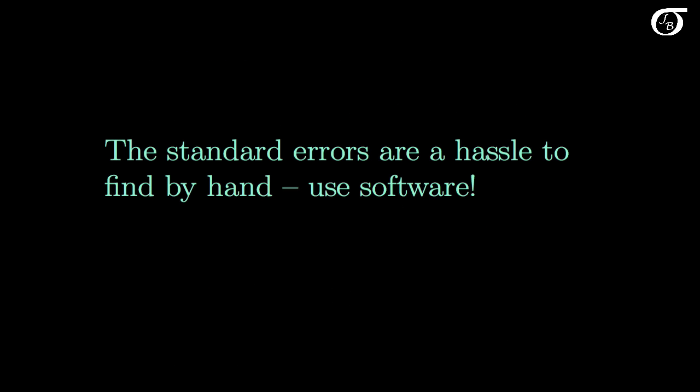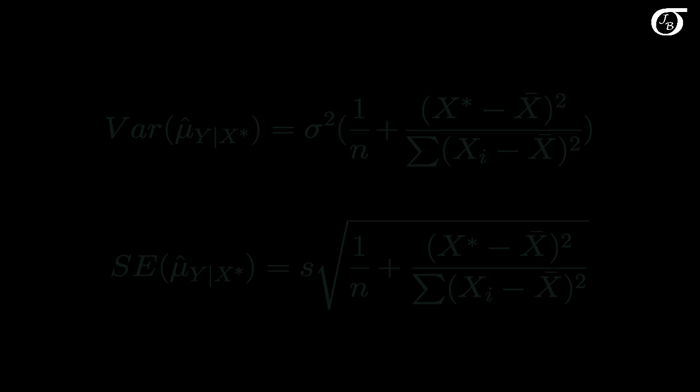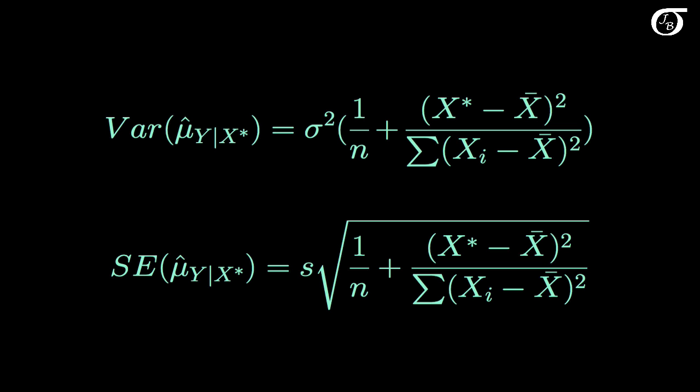The standard errors are a bit of a hassle to find by hand, so we really should use statistical software. Statistical software will find prediction intervals and confidence intervals for us, and our job will simply be to properly interpret those intervals. But it is useful to know a few things about those standard errors, so let's take a look. It's not too difficult to show that the variance of our estimated mean of y at a given value of x is equal to a specific quantity.